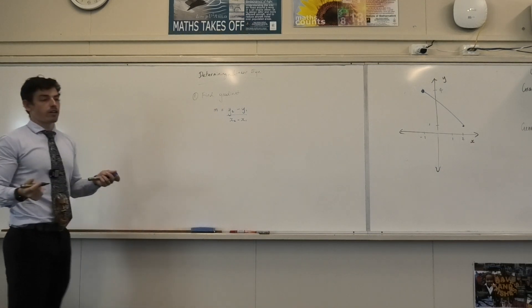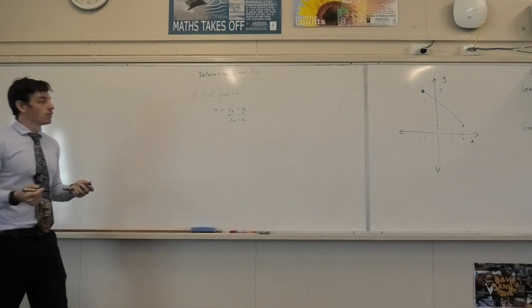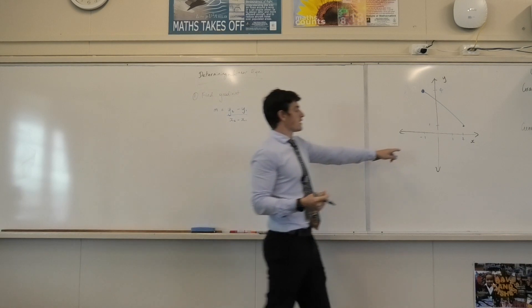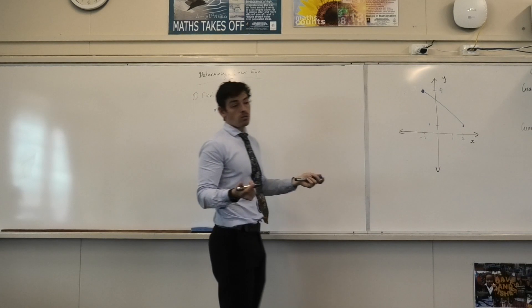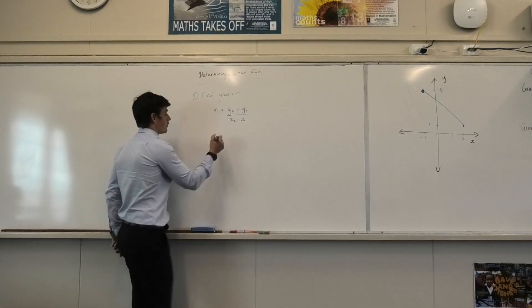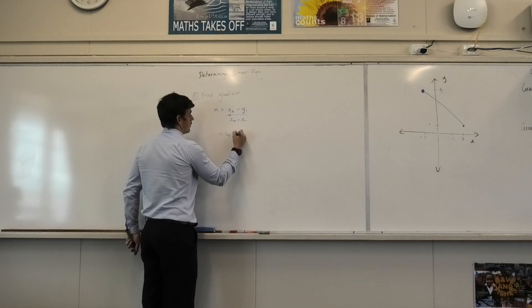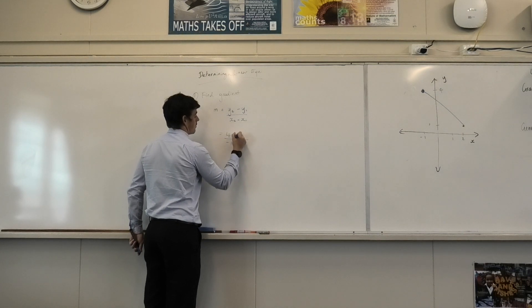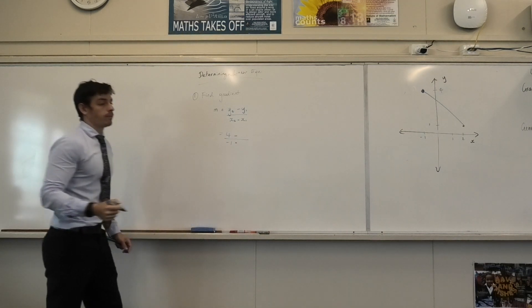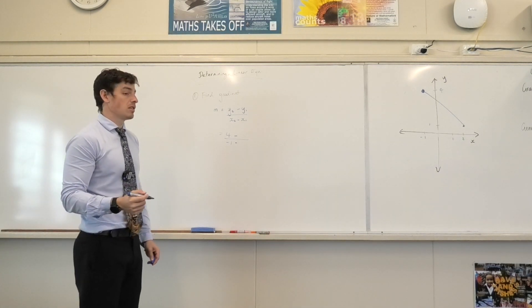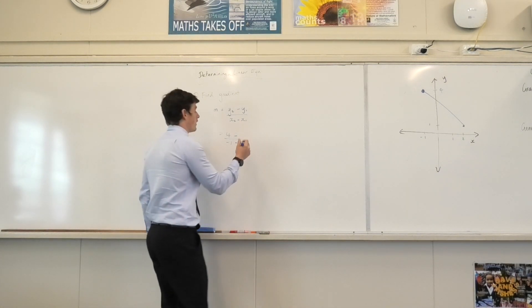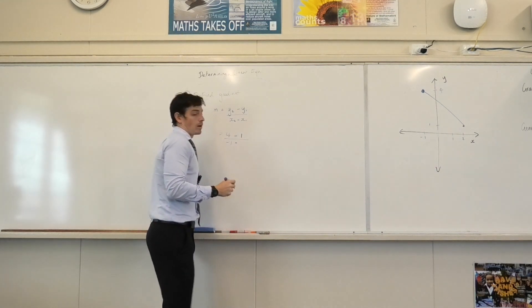What points do we know in this graph? We know that when x equals negative 1, what's y equal? 4. So we can call that point 2. Why do we call that point 2? So we've got 4, negative 1. What would be my value for y1 there? 1.